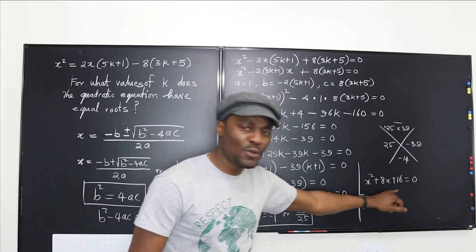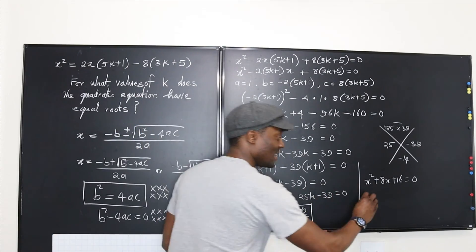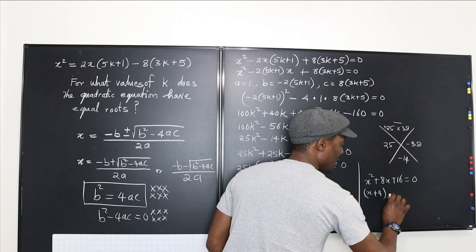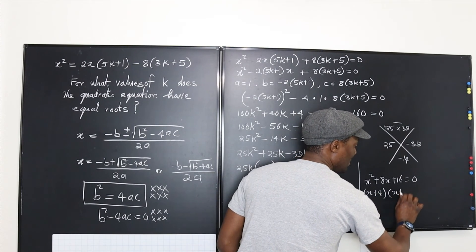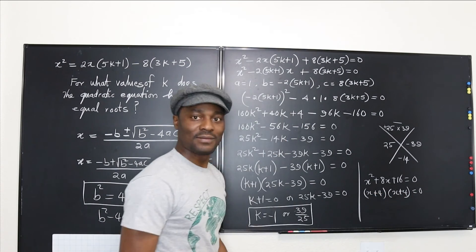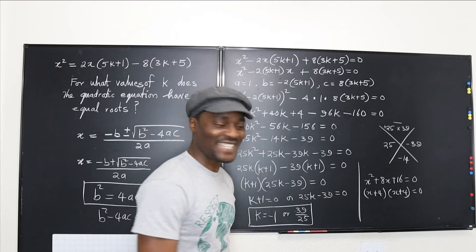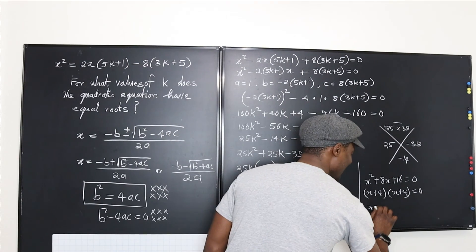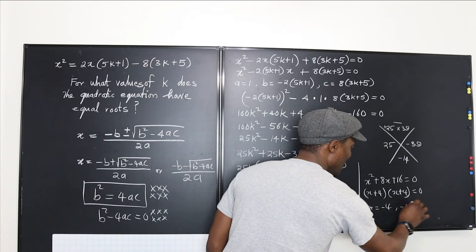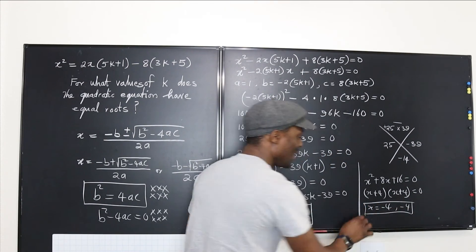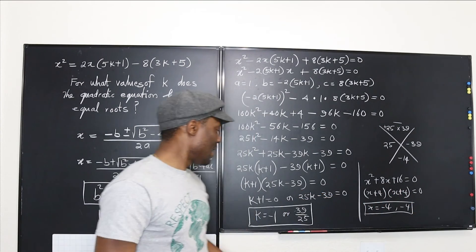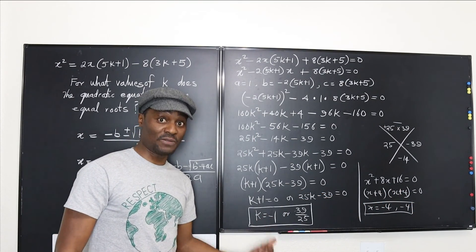Will this give you equal roots? Yes — because when you factor x² + 8x + 16, you get (x + 4)(x + 4), meaning both answers are x = −4. So you get x equals negative four or negative four. And this is what the question would have been if we knew the value of k to be negative one.